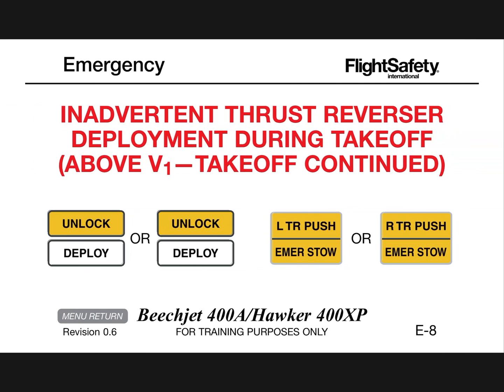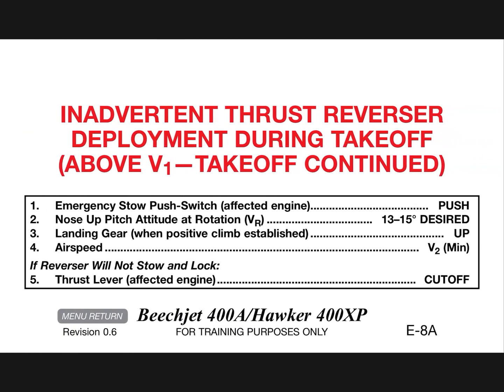Inadvertent thrust reverser deployment during takeoff above V1: takeoff continued, emergency stow push switch affected engine push. Nose up pitch attitude at rotation VR 13 to 15 degrees desired. Landing gear — when positive climb established, up. Airspeed V2 minimum.